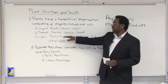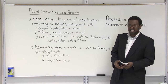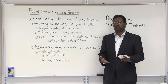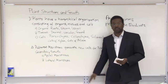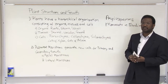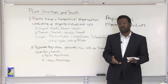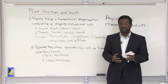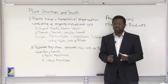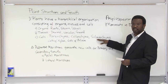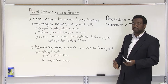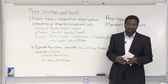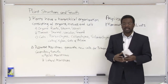Then we have collenchyma cells, which have slightly thicker cell walls than parenchyma cells and predominantly provide the plant with more stability and support while still allowing flexibility for growth. Then we have the most differentiated: sclerenchyma cells, which have secondary cell walls. A material called lignin lignifies the cell walls, making them very rigid and structurally tough. You would find a lot of sclerenchyma cells in secondary growth, as the plant must support its height and weight as it grows.